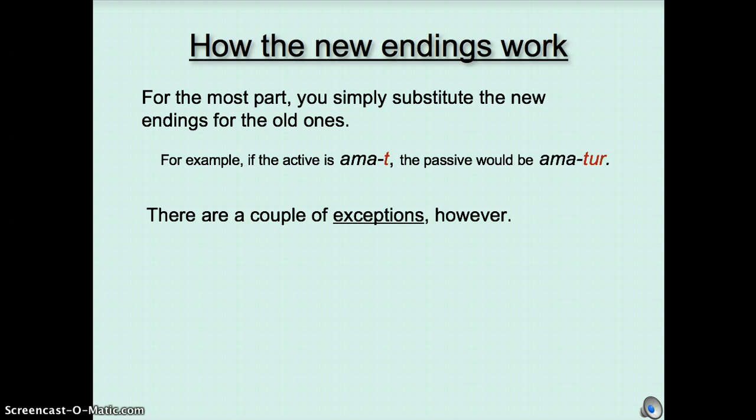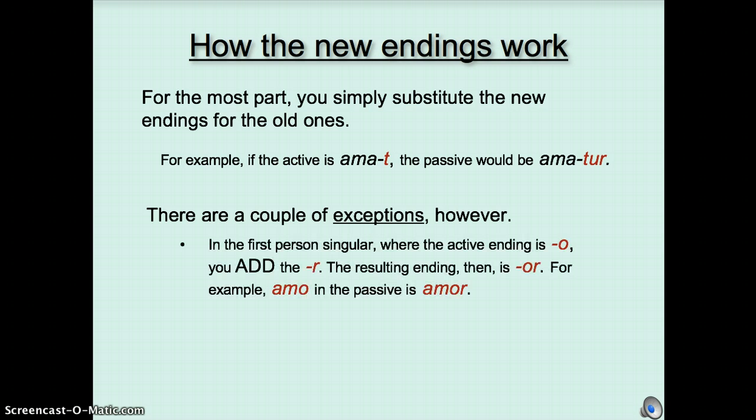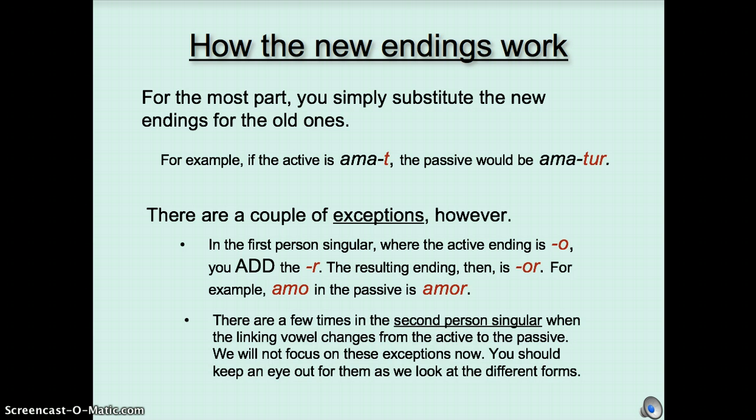There are a couple of exceptions, however. In the first person singular, where the ending is o, we are going to add the r, instead of taking off the o and sticking an r on, which would get amor, which wouldn't mean anything. So we have amo, and add the r, and we get amor. The other exception is a few times in the second person singular, the linking vowels get funny. Let's not concentrate on those. If you concentrate on simply substituting the new endings for the old ones, you'll get things 90% right.